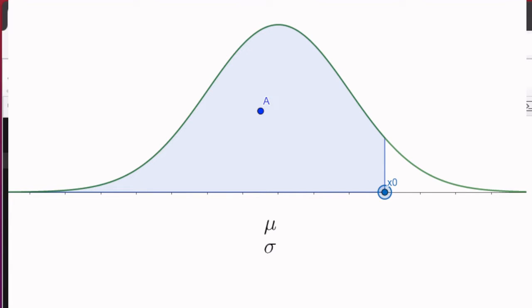If a variable is normally distributed, then it has a mean and a standard deviation, and its probability distribution looks like this.